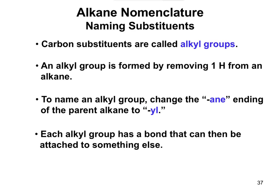Substituents can be halogens or other types of molecules, but carbon-containing substituents are referred to as alkyl groups. An alkyl group is a carbon-containing group attached to the rest of the molecule's chain. A one-carbon alkane is methane; when converted to a substituent, you remove the '-ane' ending and change it to '-yl', giving you methyl. Two carbons gives ethyl, then propyl, butyl, pentyl, hexyl, and so on.